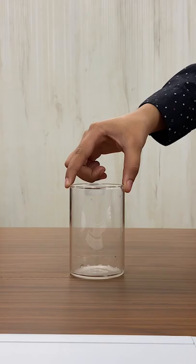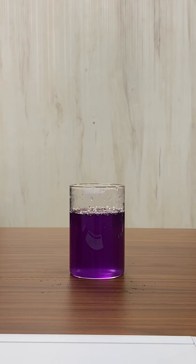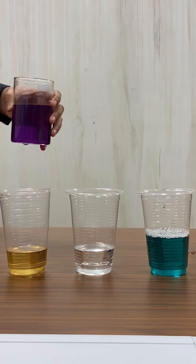Adding the red cabbage solution to soap solution makes it green. There is no change when added to neutral salt. And when added to vinegar, it turns red.